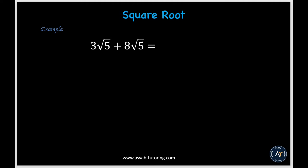Now let's learn how to add square roots together. If you want to add square roots, you need to make sure that the numbers inside the square roots are the same. In this case, we have 5 in both. So you just add the outside numbers: 8 plus 3 is 11, giving you 11 square root of 5.